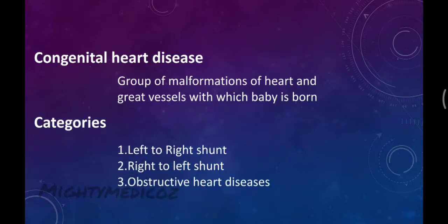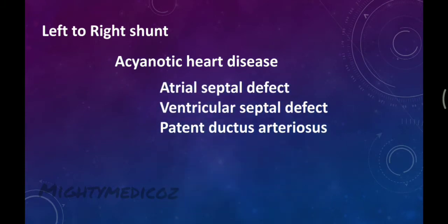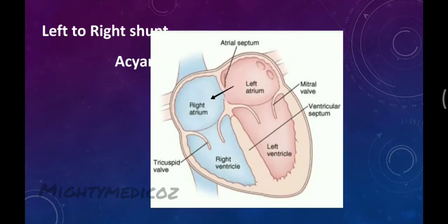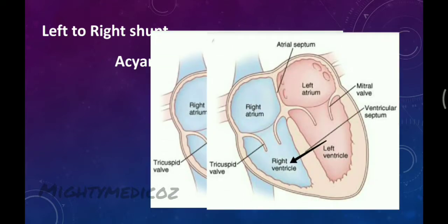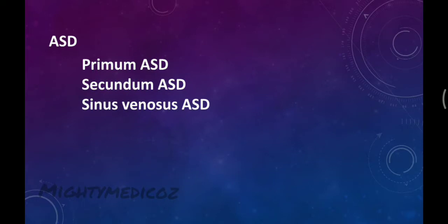Congenital Heart Disease includes conditions like atrial septal defect (ASD), ventricular septal defect (VSD), and patent ductus arteriosus (PDA). ASD has three types: primum ASD, secundum ASD, and sinus venosus ASD. An important distinction is that ASD is not the same as a patent foramen ovale (PFO).